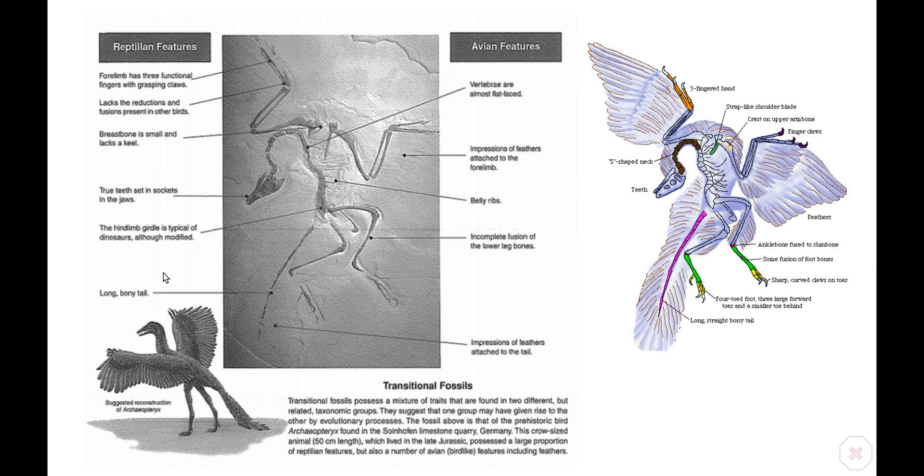So these fossils really helped to give scientists an idea of the evolutionary pathway from starting off with simple organisms that lived in the water, then to fish, amphibians, reptiles, birds, mammals, etc. And that brings us to the end of this video. Thank you for watching.